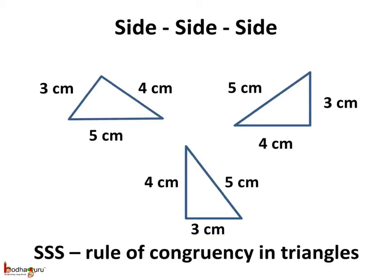But if the length of three sides are given, then we can draw only one triangle. All the triangles drawn with 3 cm, 4 cm, and 5 cm as sides are the same because they are congruent. They are congruent according to the SSS rule — that is Side Side Side — because all three corresponding sides are equal.